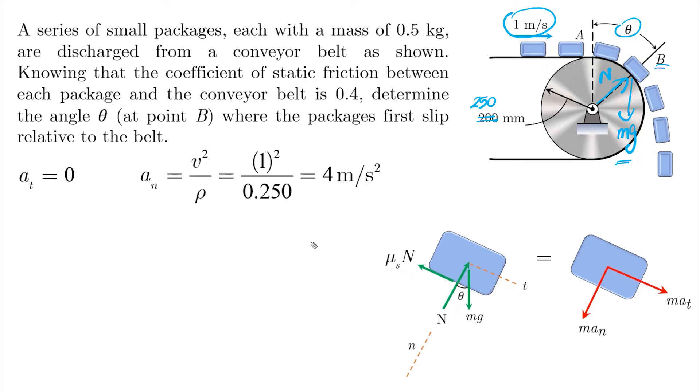Let's start by the normal equation. So we have the summation of forces in this direction equals ma_n. This results in the variable N, or the normal, as a function of θ.